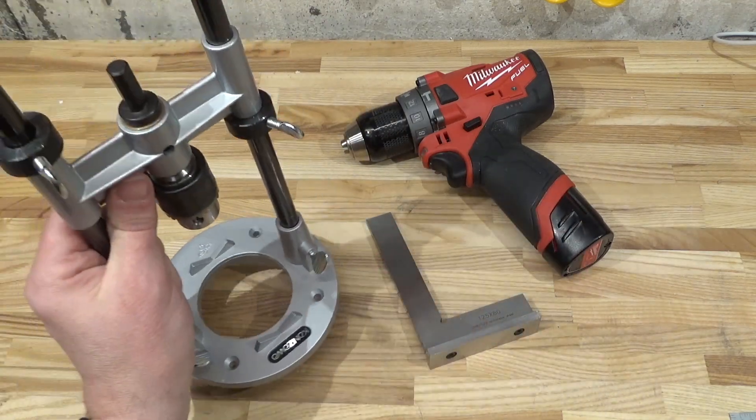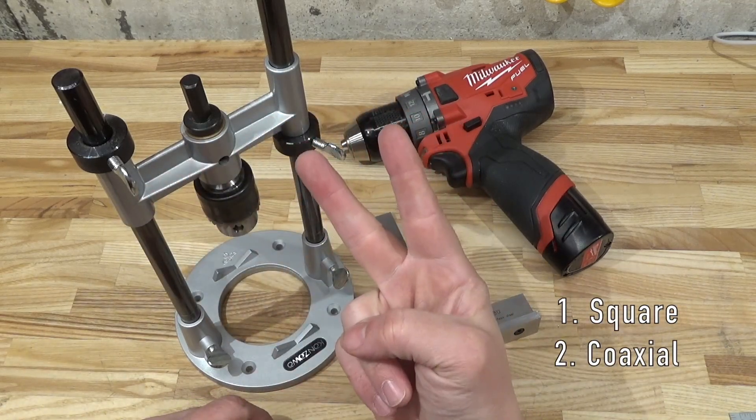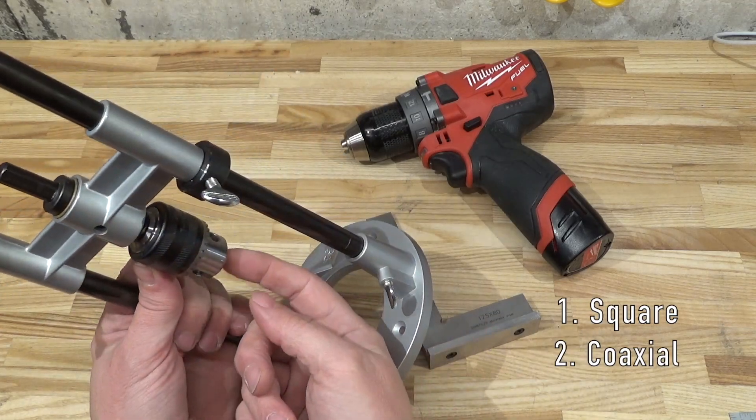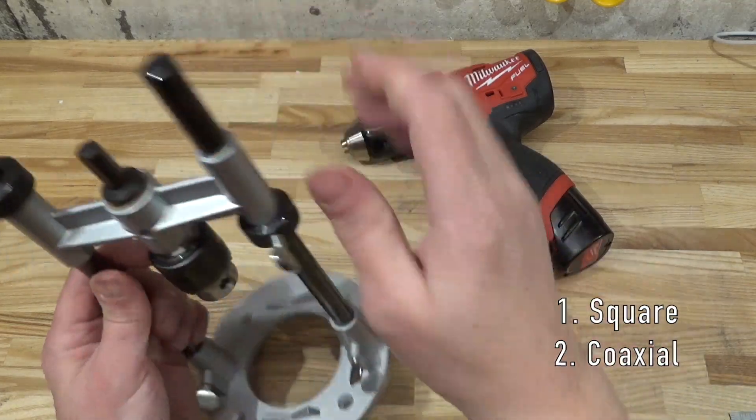Number two: coaxialness. Coaxialness is whether the drill bit is actually coaxial with the quill.